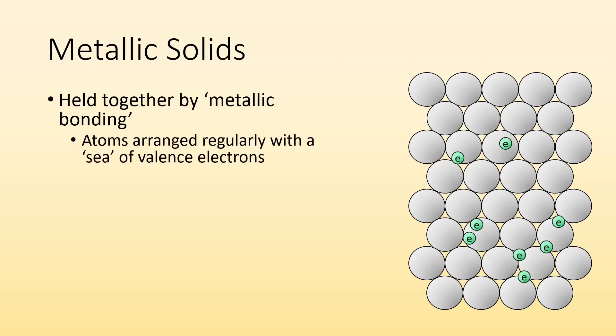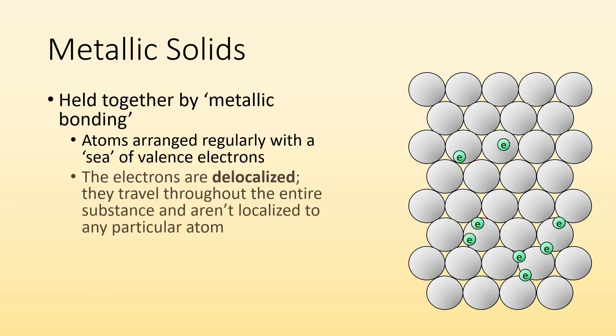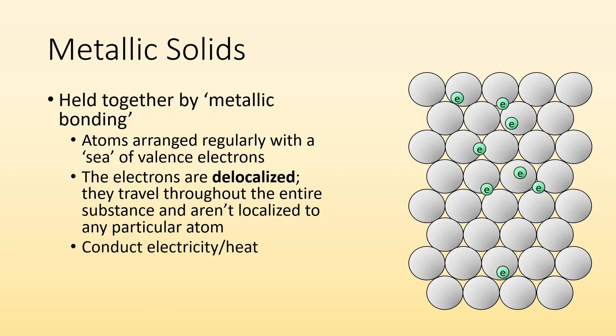Atoms are going to be arranged regularly, and there's like a sea of valence electrons. So you can see those valence electrons are delocalized. They're not stuck on any one atom. They're moving out throughout the entire substance. And that's why they're so good at conducting electricity. Those electrons are able to move around without much resistance.